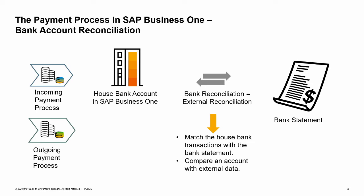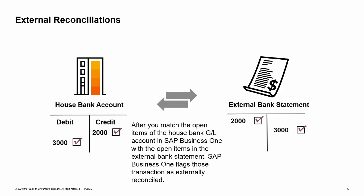This matching process is called bank reconciliation, where you make a comparison of an account with external data. In SAP Business One we call this process external reconciliation. Bank reconciliations help business owners ensure all bank transactions are recorded properly on the accounting ledger and bank statement. When you perform an external reconciliation, you match the open items of a bank GL account in SAP Business One with the open items in an external account statement. After doing this, SAP Business One flags those transactions as externally reconciled.